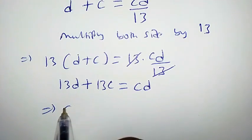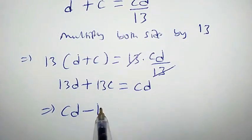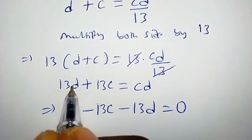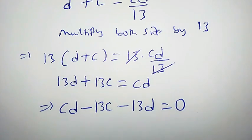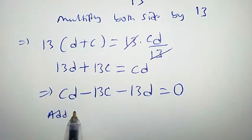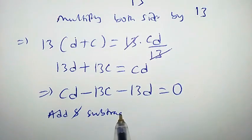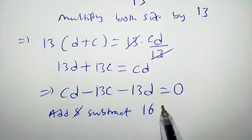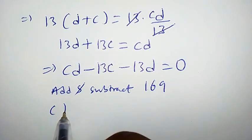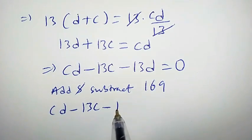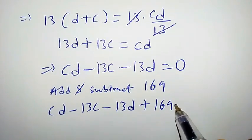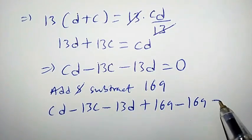This implies that cd minus 13c minus 13d equals 0, when we transfer each of these terms to the right side. Now, let us add and subtract 169 to the left hand side. We are going to have cd minus 13c minus 13d plus 169 minus 169 equals 0.